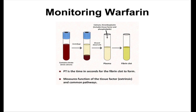We monitor warfarin by taking the patient's blood and binding out the calcium with citrate. Then we take out the plasma, put in phospholipids, and add tissue factor to simulate tissue damage. Then we add calcium to start the cascade and time how long it takes to form a clot. This gives us the prothrombin time, or pro-time, or PT. This pro-time can be divided by the standard pro-time to get the international normalized ratio, or INR.